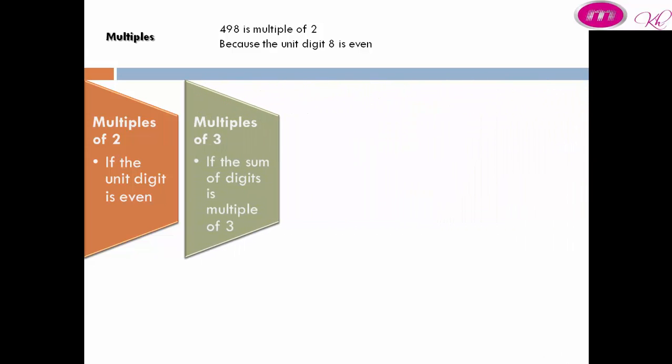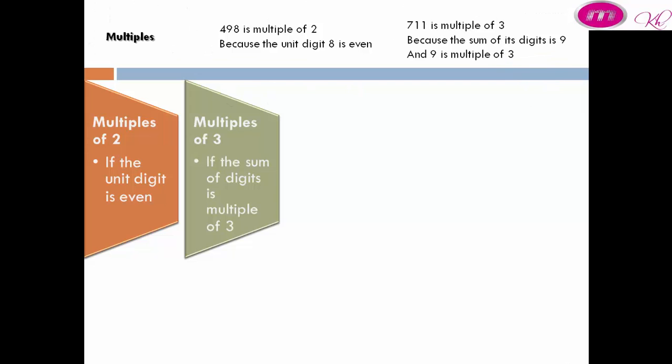Multiple of 3: a number is a multiple of 3 if the sum of its digits is a multiple of 3. For example, 711 is a multiple of 3 because the sum of its digits is 9, and 9 is a multiple of 3.